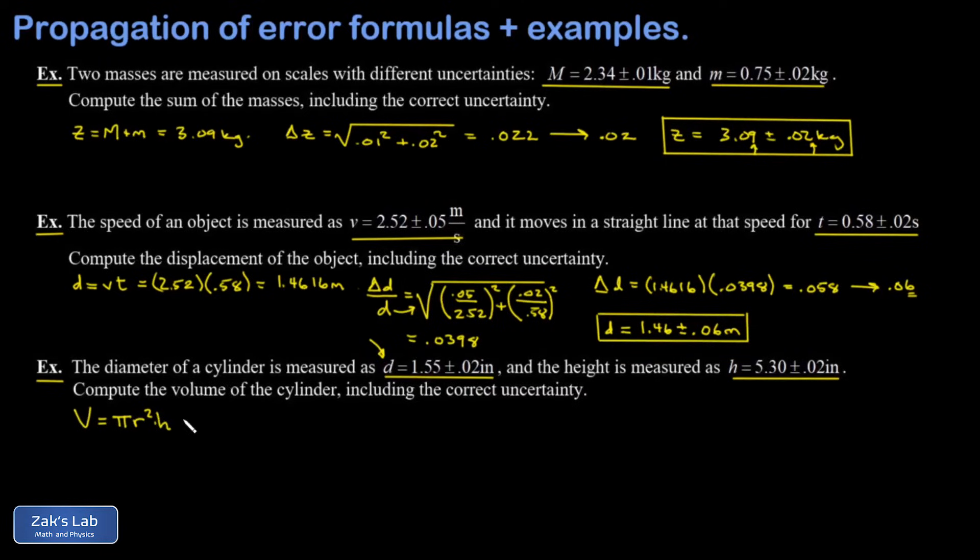We really need to express the volume in terms of the directly measured quantities. So I have to plug in here that the radius is half the diameter. And when I square D over 2, it gives me a factor of one-fourth. So I have one-fourth pi diameter squared times height. Now I can see that the volume is proportional to the diameter squared and the height to the first power. And I can apply our formula.